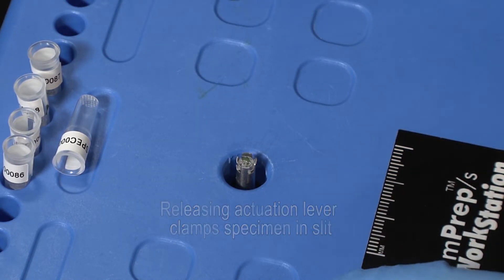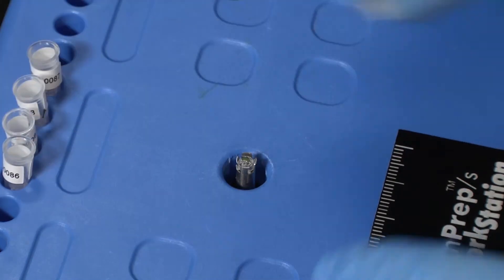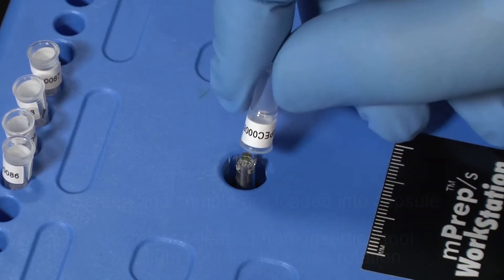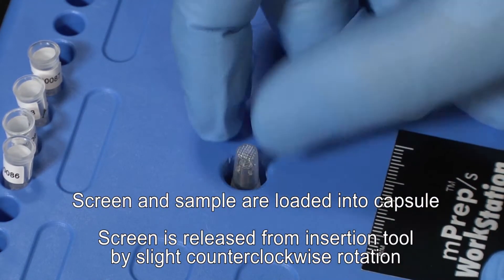An empty capsule is then slid over the insertion tool and rotated about one-eighth turn counterclockwise to release the screen from the tabs before lifting off.